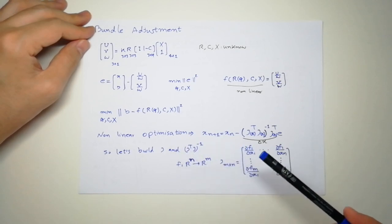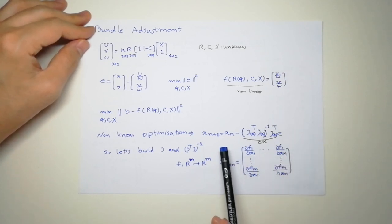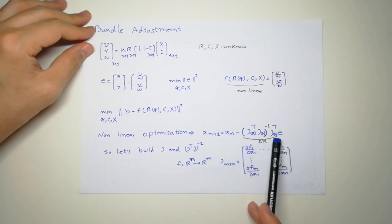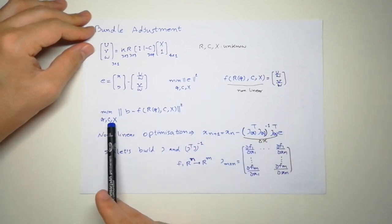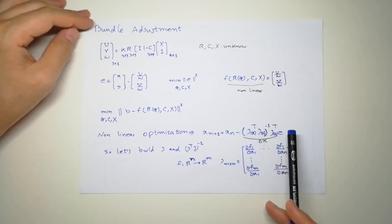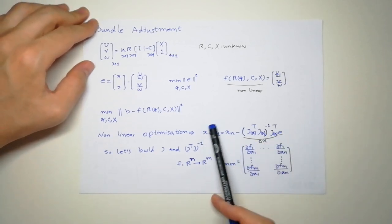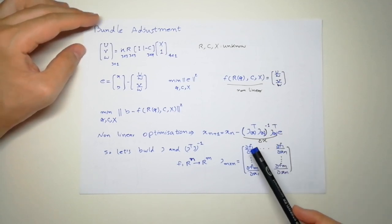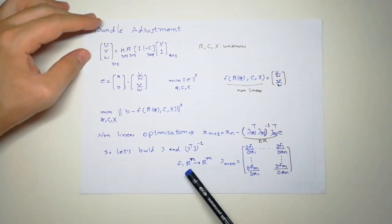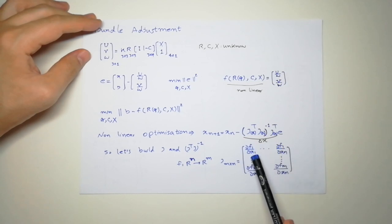So if we find Q, C, and X that minimize this, we can solve the problem. We have a nonlinear least squares problem, so we use a Gauss-Newton approach, which is iterative. We start from an arbitrary point, compute delta X — how much we should change X — multiplied by the error function E, and we get the next point. For how we get the Jacobians, please have a look at my other video on Gauss-Newton for nonlinear least squares. What we need now is J — F is a mapping from R^N to R^M — so the Jacobian has the form of the derivative of each output relative to all variables.